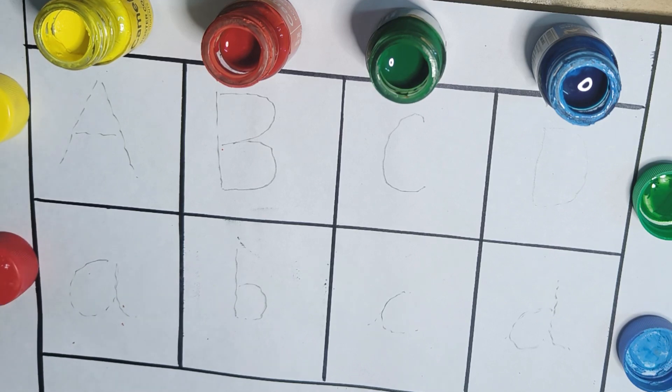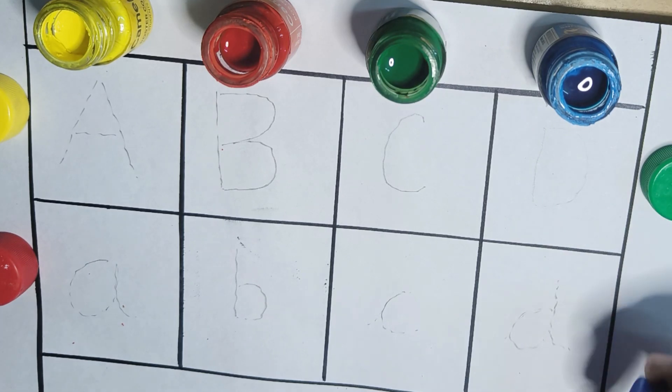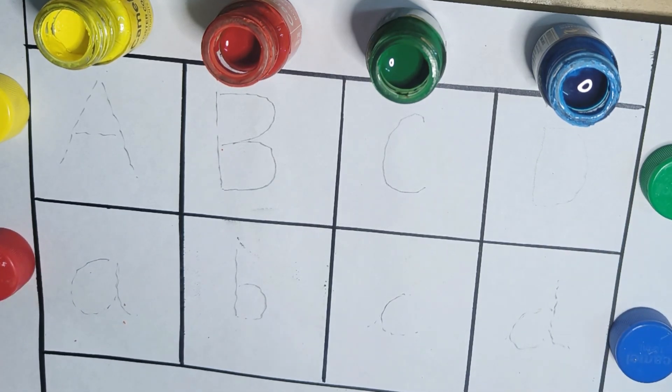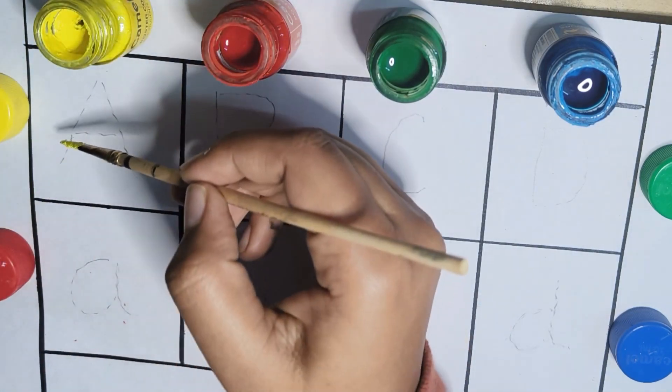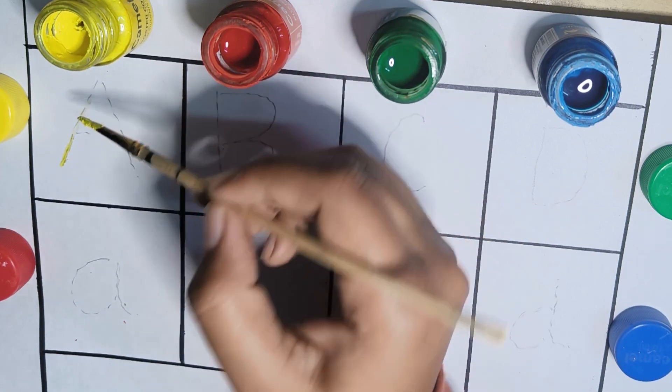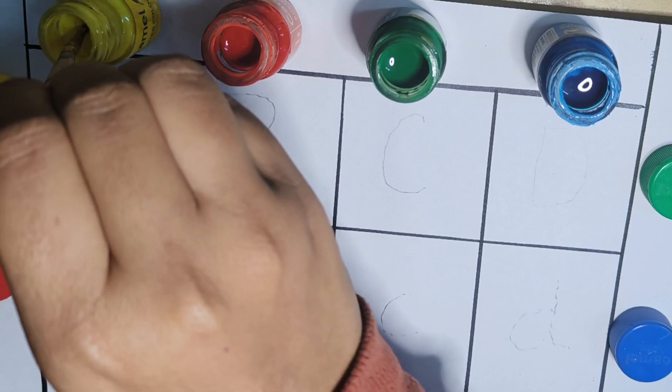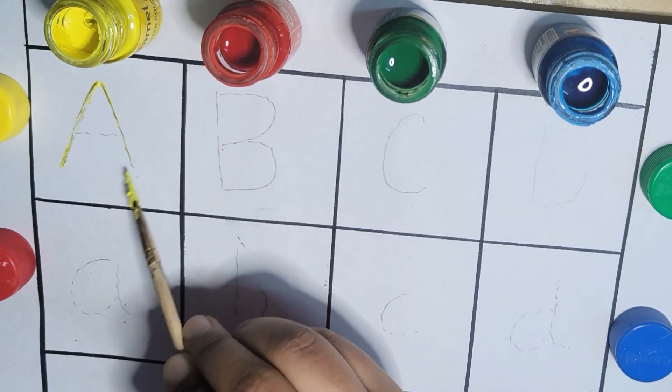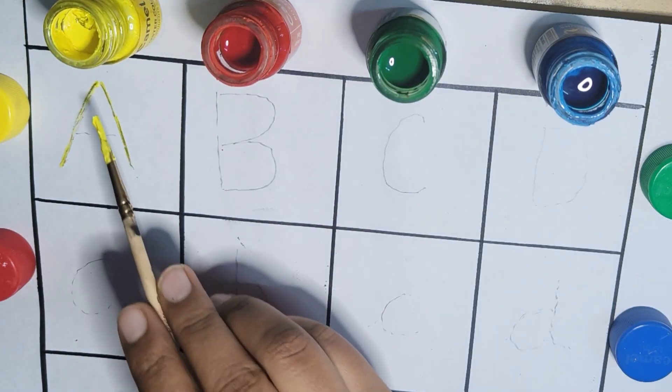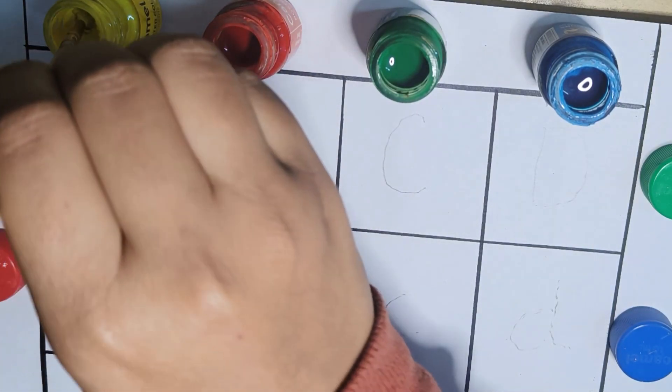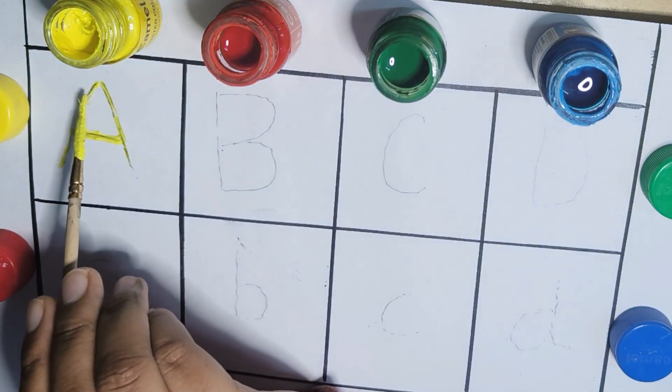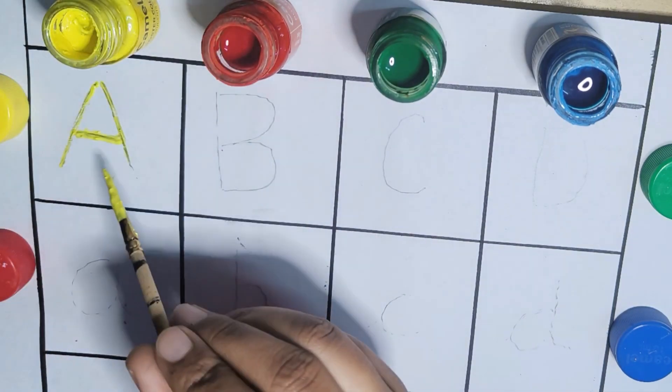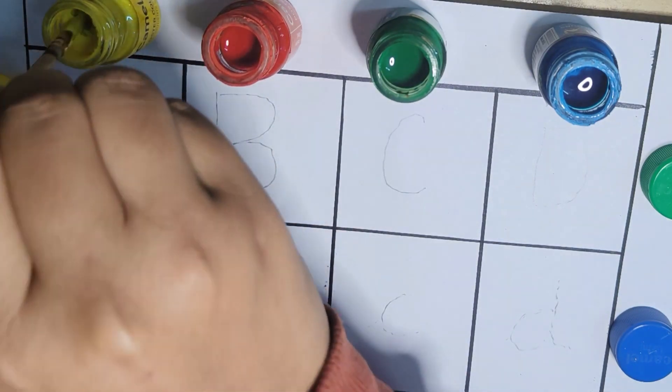So we are starting with yellow color. Yellow. You just have to write A. A for, A for, A for apple. This is A. A for apple.